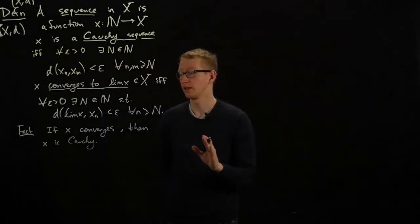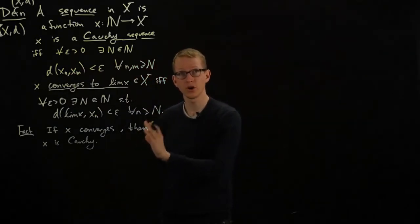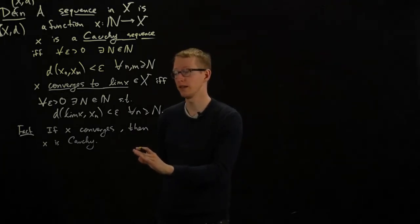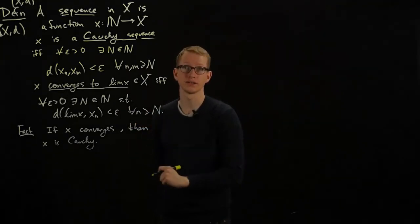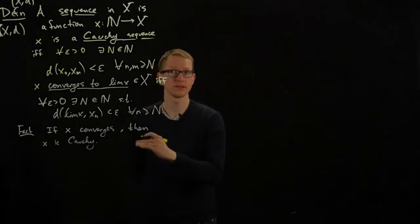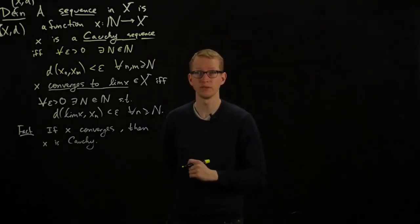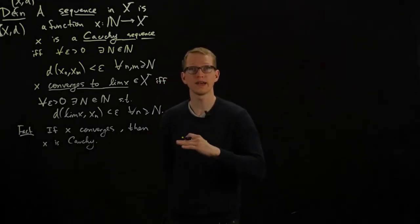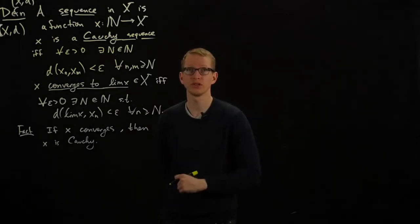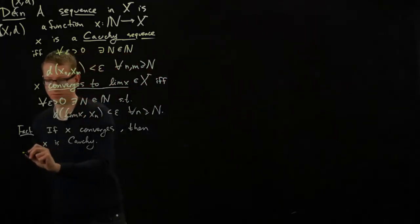However, if X is a Cauchy sequence in a metric space, it need not converge to something. The converse of this statement is false in general. But when that occurs, we give a special name to that metric space.